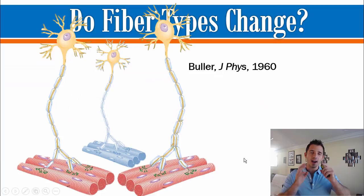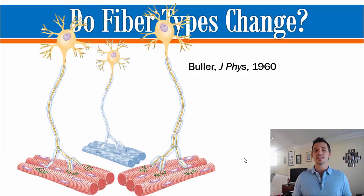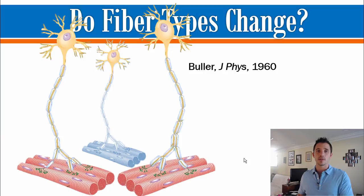I want to start by highlighting some really interesting initial work in this area. A famous study done in 1960 — really clever. What they did is they took motor units. A motor unit is an alpha motor neuron and all of the muscle fibers that it innervates — in other words, the nerve and all the fibers that it activates and turns on.